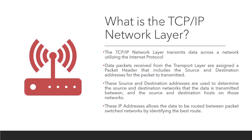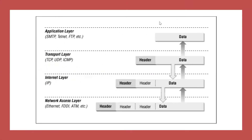This diagram shows how data is transmitted across the different layers. From the application layer, a request for data goes to the transport layer where a TCP header is added. When it gets to the internet layer, an IP header is added — which includes the source and destination addresses. Then from the IP layer it goes down to the network access layer where it is physically transmitted to the other network or host.